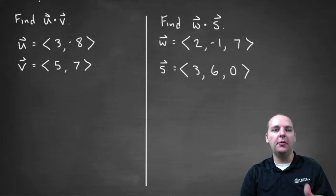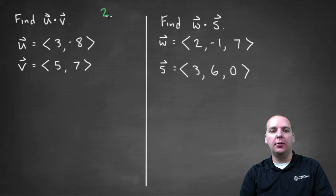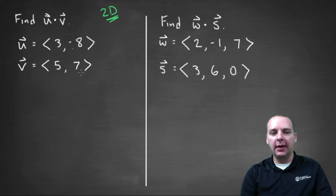Let's try taking the dot product of a couple of vectors. Our first vector, we're going to take u dot v, where u and v are two-dimensional vectors. We have <3, -8> and we have <5, 7>. So these are just in the x-y plane; they only have an i-th component and a j-th component.